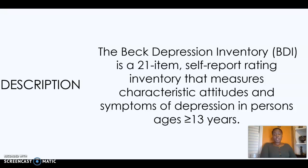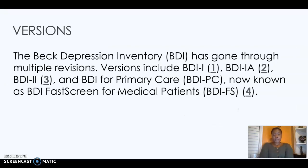The Beck Depression Inventory is a 21-item self-report rating inventory that measures characteristics, attitudes, and symptoms of depression in persons age 13 years and older. There are three versions of this test, including the BDI-1, the BDI-1A, the BDI-2, and the BDI for Primary Care, now known as BDI Fast Screen, for medical patients.